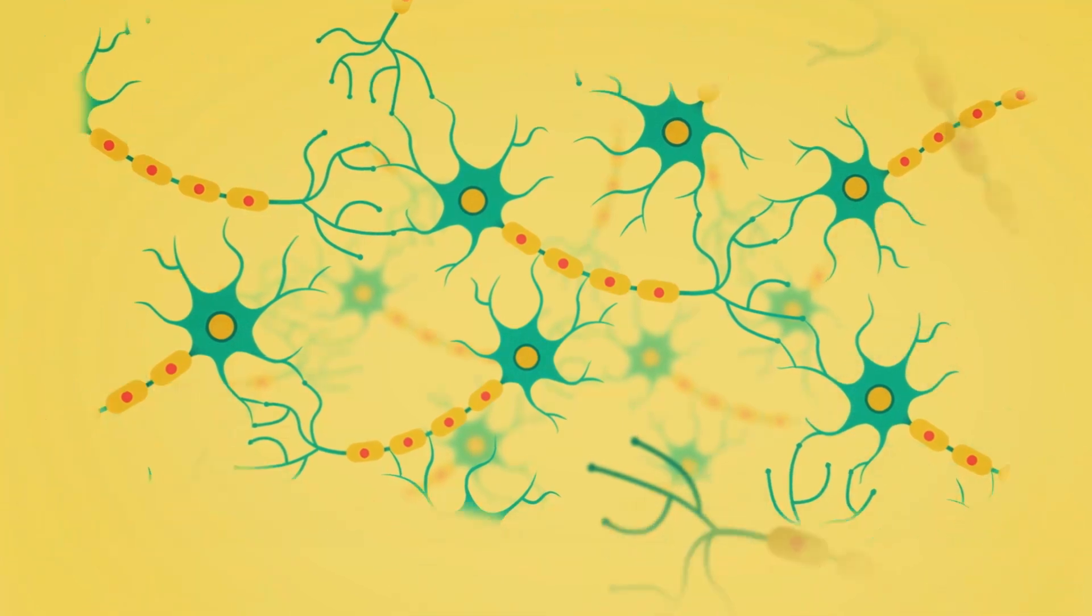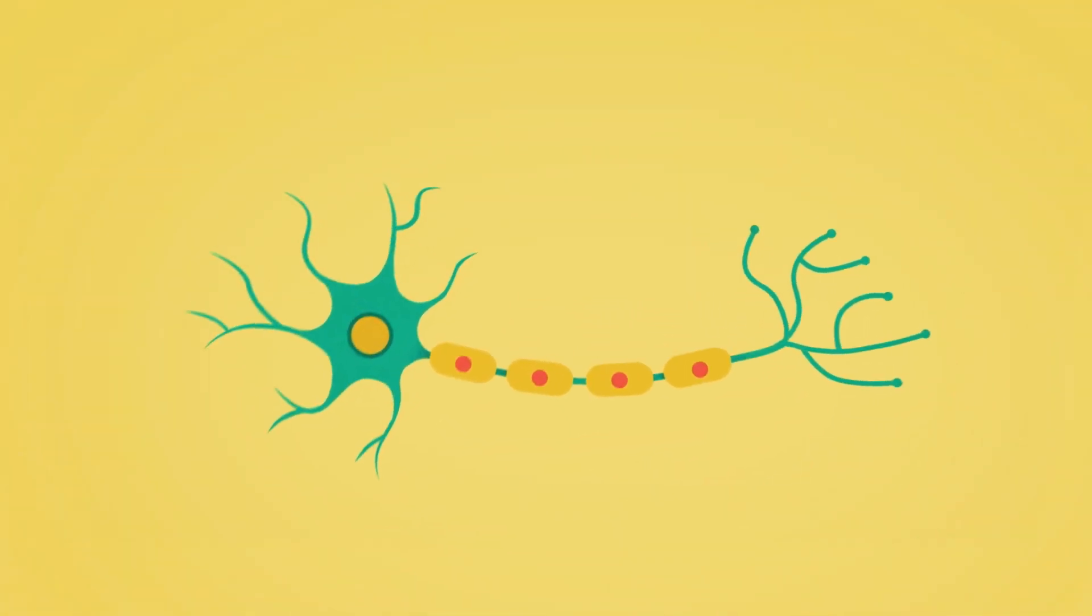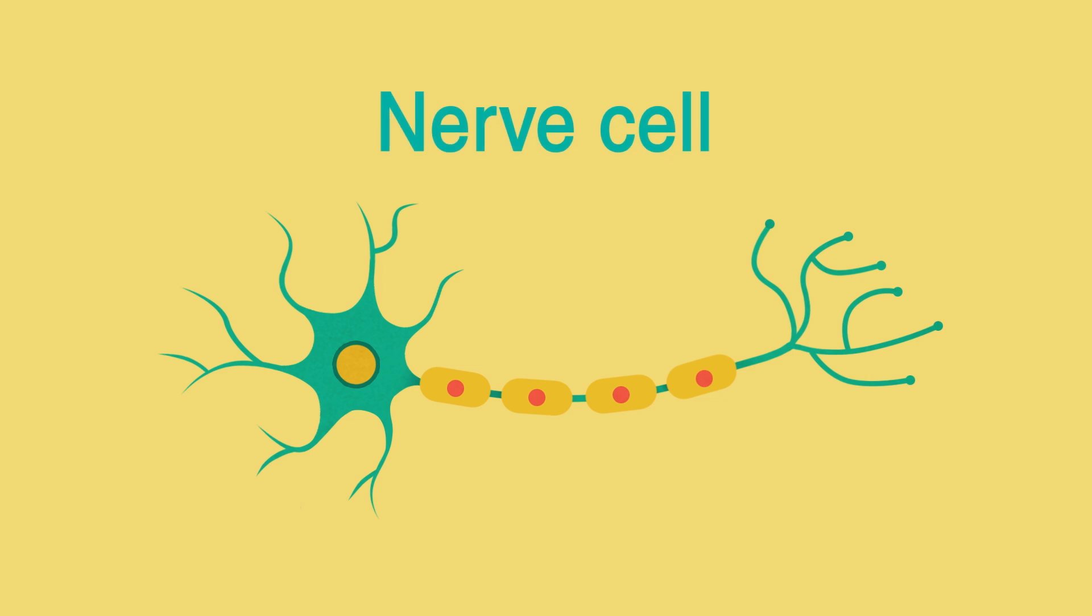Nerve cells are elongated, with many tentacle-like projections which allow them to make contact with the cells around them.